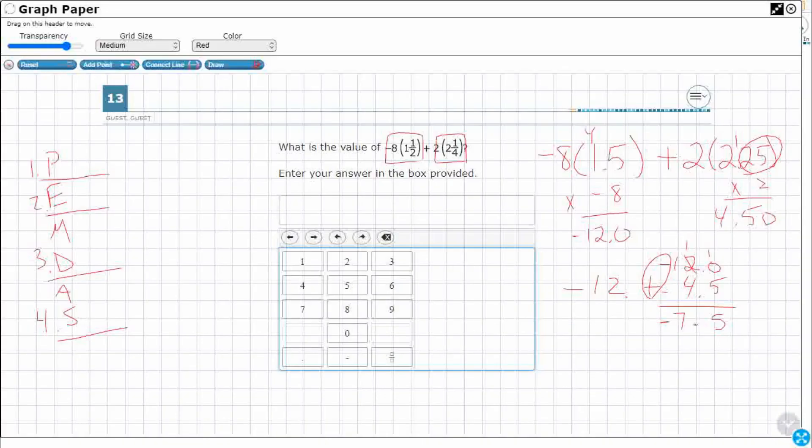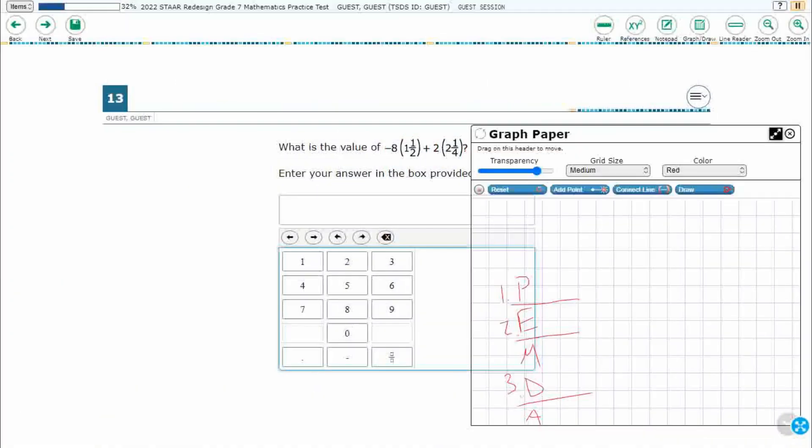And so negative 7.5, if you kept this in the fraction, you could keep it negative 7. And that 0.5 is 5 tenths, which is 1 half.